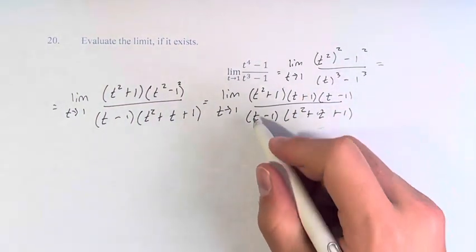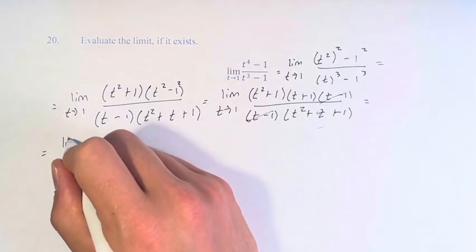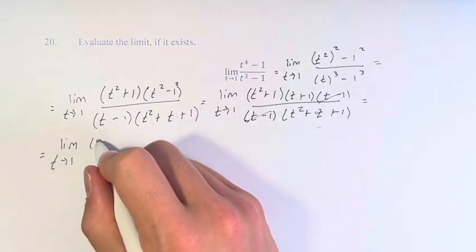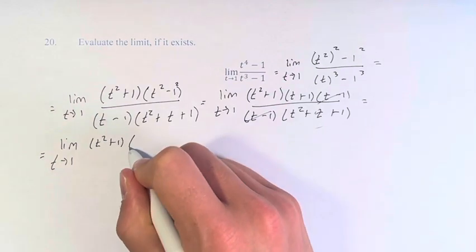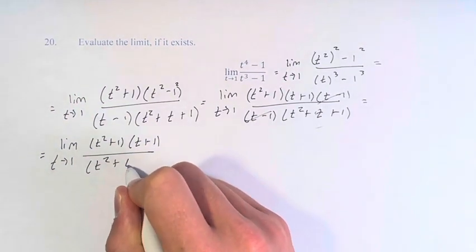Now we can see why we did this factoring, because you can eliminate t minus 1. This gives us the limit as t approaches 1 of t squared plus 1 times t plus 1 over t squared plus t plus 1.